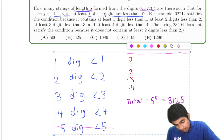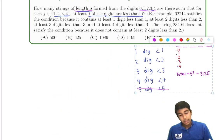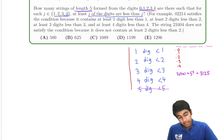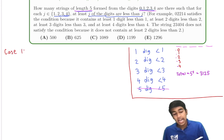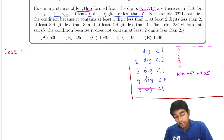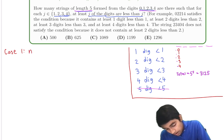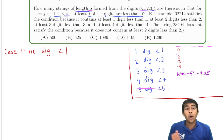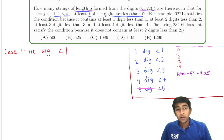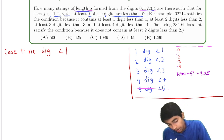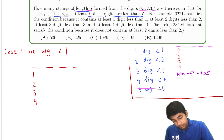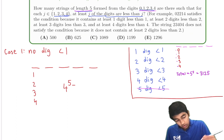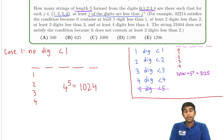Case 1: there are no digits less than 1 — meaning all digits are 1 or more, so each digit is chosen from {1, 2, 3, 4}. That gives 4 choices per digit for 5 digits: 4^5 = 1024 ways.